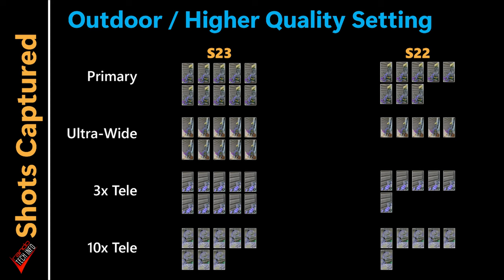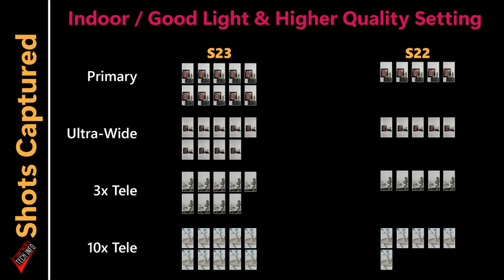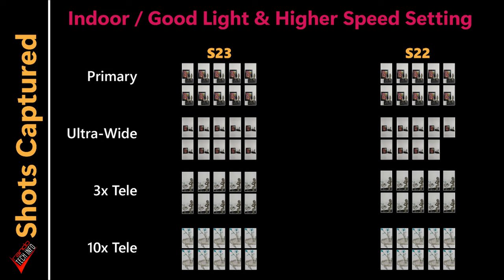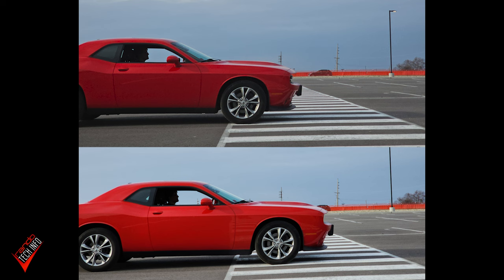Testing outdoors with the higher quality capture speed setting, the S23 performed noticeably better than the S22, with the S23 almost handing in perfect results. However, with the capture speed set to prioritize speed, the S22 closed the gap and provided very similar, close-to-perfect results. Testing indoors in good light showed a similar pattern — the S23 outperformed the S22 on the quality setting but almost completely closed the gap on the speed setting. Notably, regardless of which capture setting was used, there was no real noticeable change in picture quality on either phone.